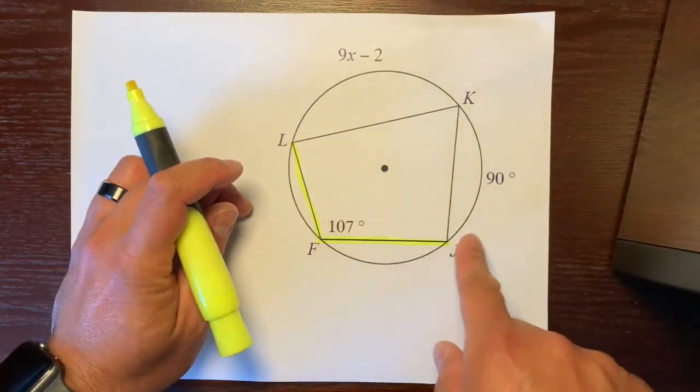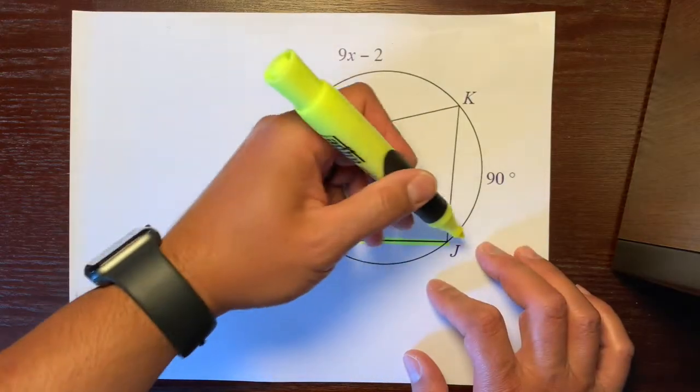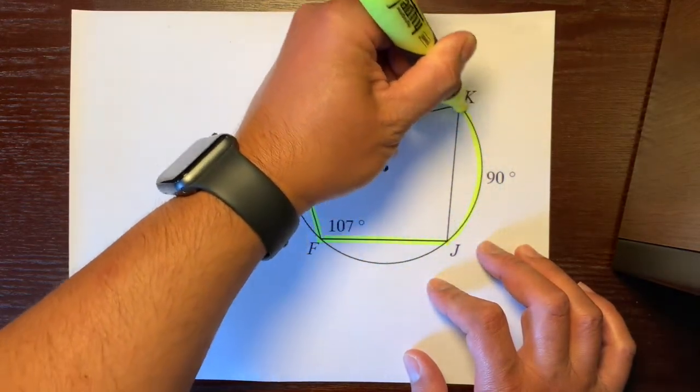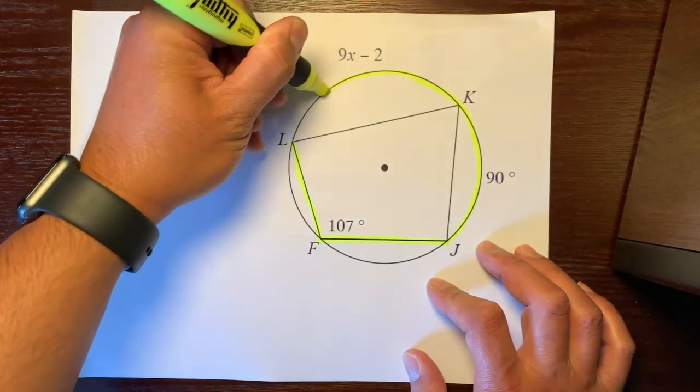And so this inscribed angle, its intercepted arc, our arc is this entire arc right here.